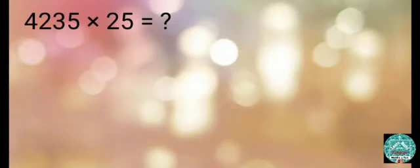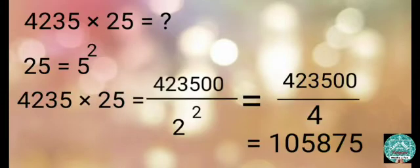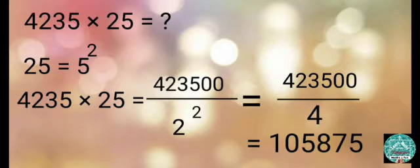Multiply 4,235 by 25. 25 equals 5 raised to the power 2, so put two zeros to the right of 4,235. Then divide this number by 2 raised to the power 2, that is 4. After dividing, we get 105,875.